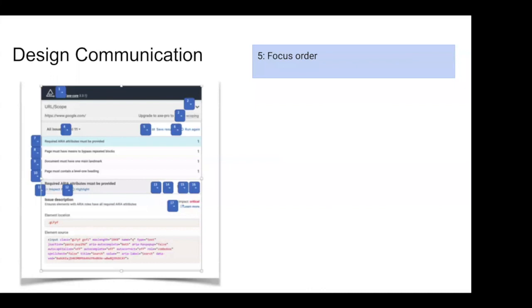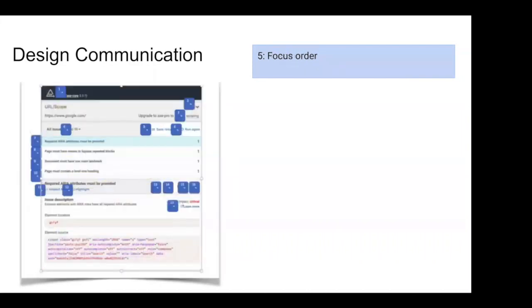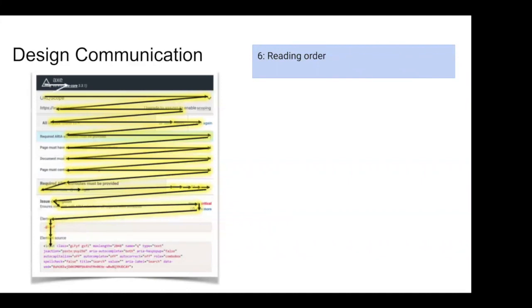Focus order annotations are one of my favorites. We overlay little blue tab stop indicators on the UI that are enumerated, describing what the focus order should be so the developer knows to implement it that way. It actually drives DOM order, which means we'll also get a good reading order. Reading order annotations use arrows to draw you through how the user would be reading the content.